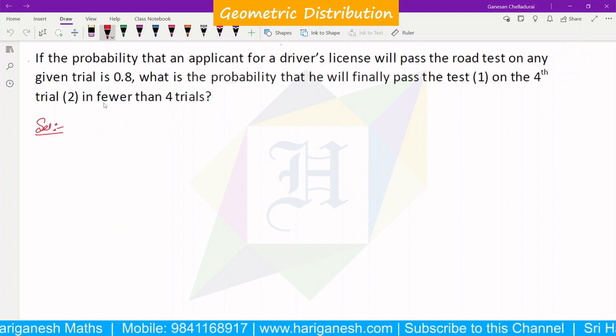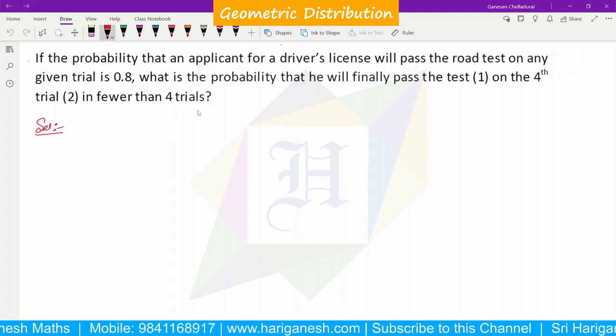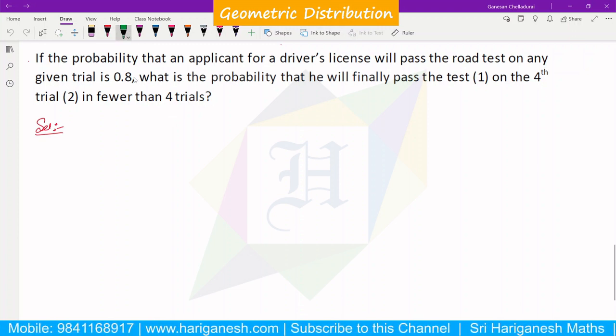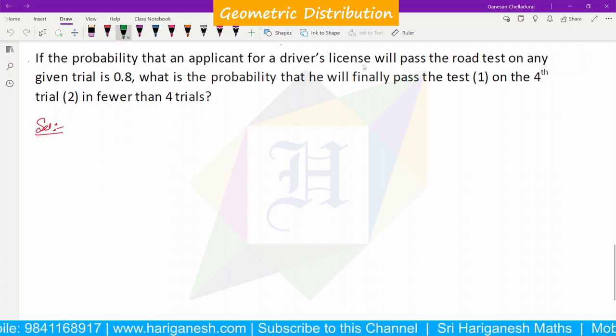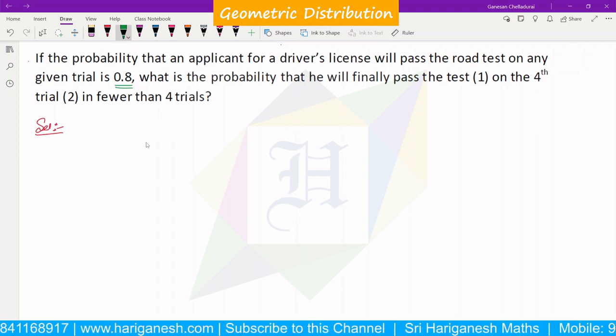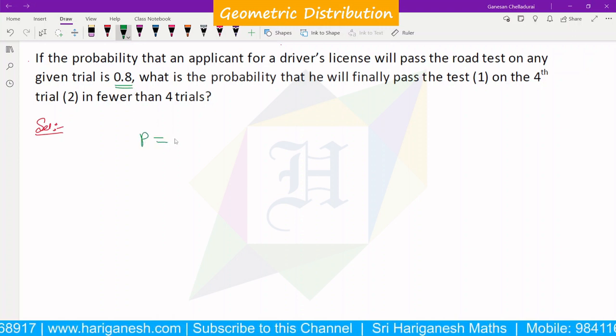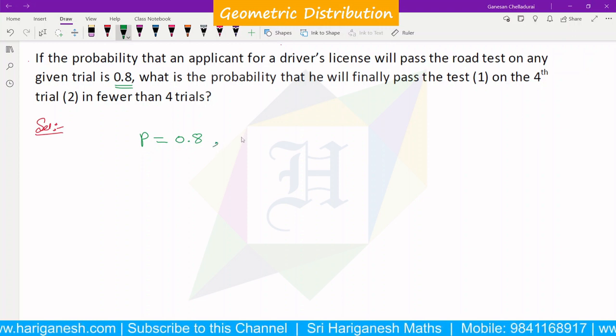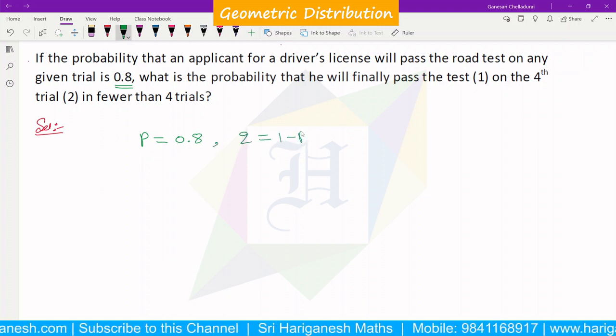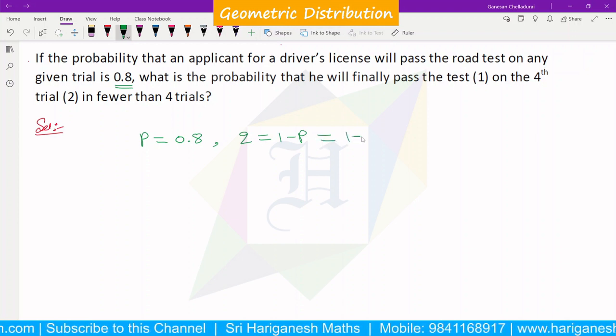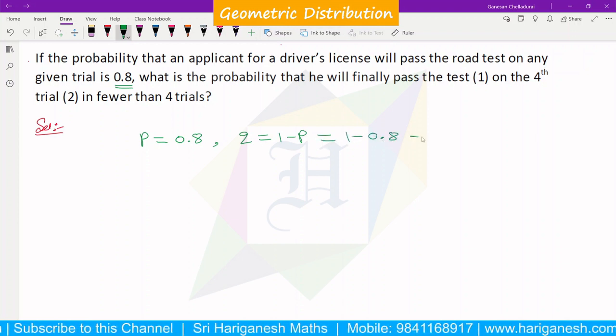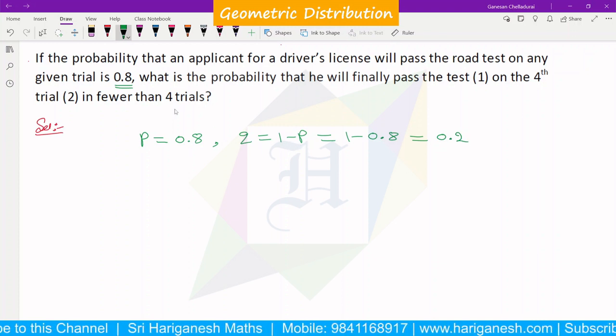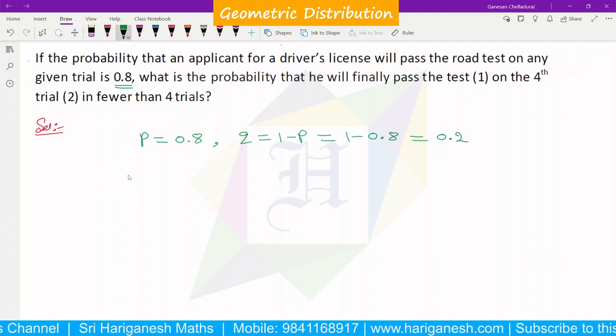In the other question, fewer than 4 trials. If you look at the test, the road test will pass with probability of 0.8. So, P is equal to 0.8. And for geometric distribution, Q is 1 minus P. So, 1 minus 0.8 is 0.2. We have P equals 0.8 and Q equals 0.2.